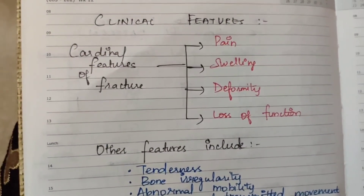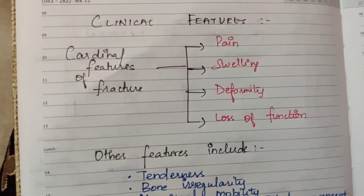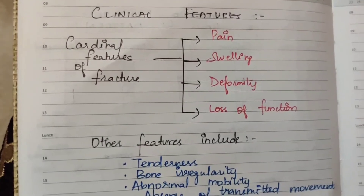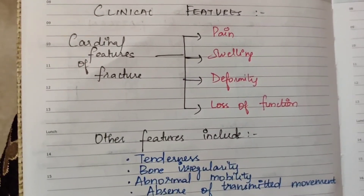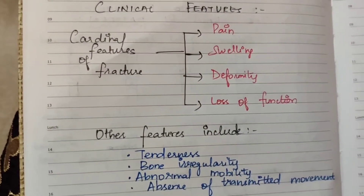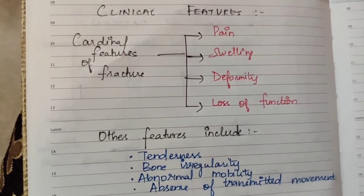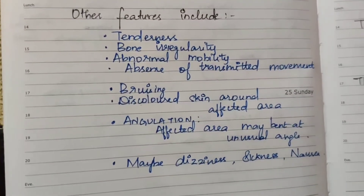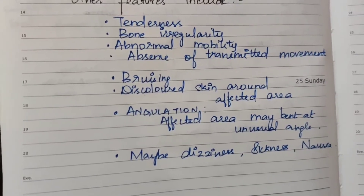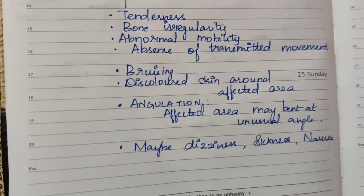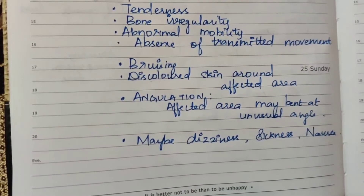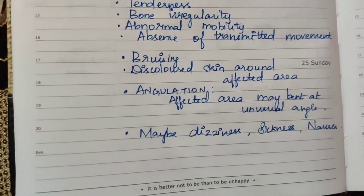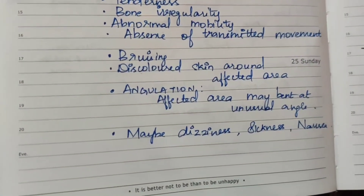Clinical features — cardinal features of fracture: there are four — pain, swelling, deformity, and loss of function. Pain is severe; swelling occurs at the site; deformity means a change in position; and loss of function means movement is not possible. Other features include tenderness, bone irregularity, abnormal mobility, absence of transmitted movement, bruising with skin discoloration around the affected area, angulation, and sometimes dizziness, nausea, and sickness.